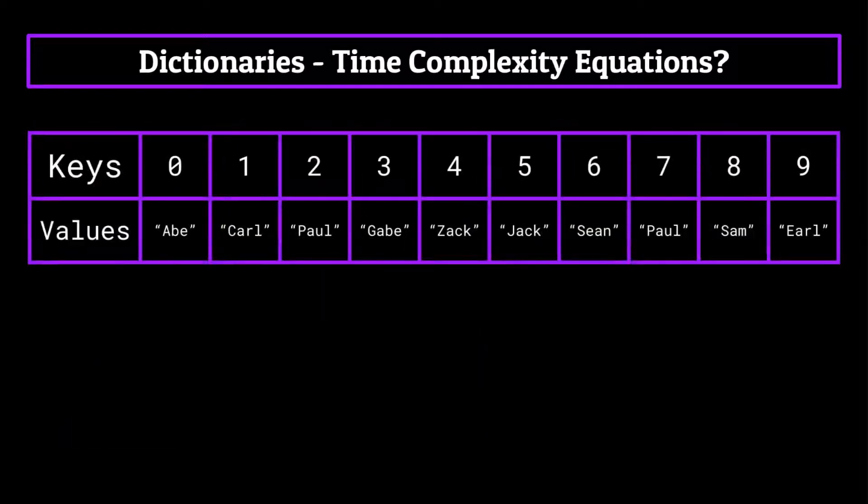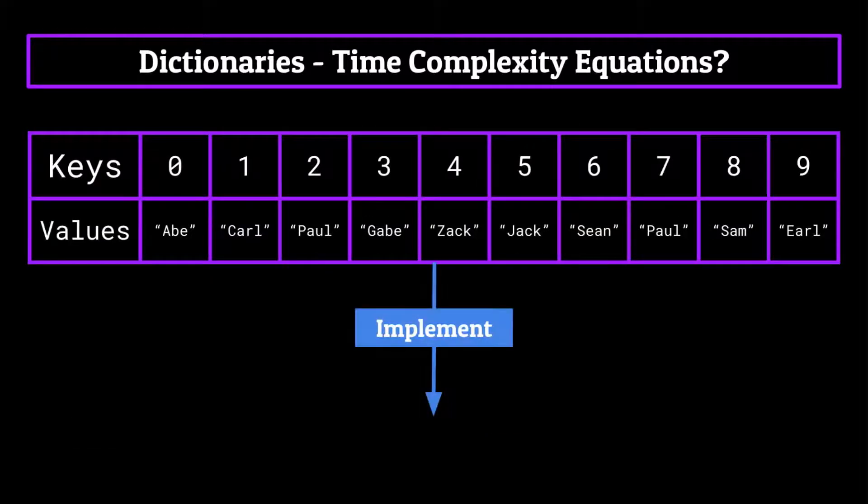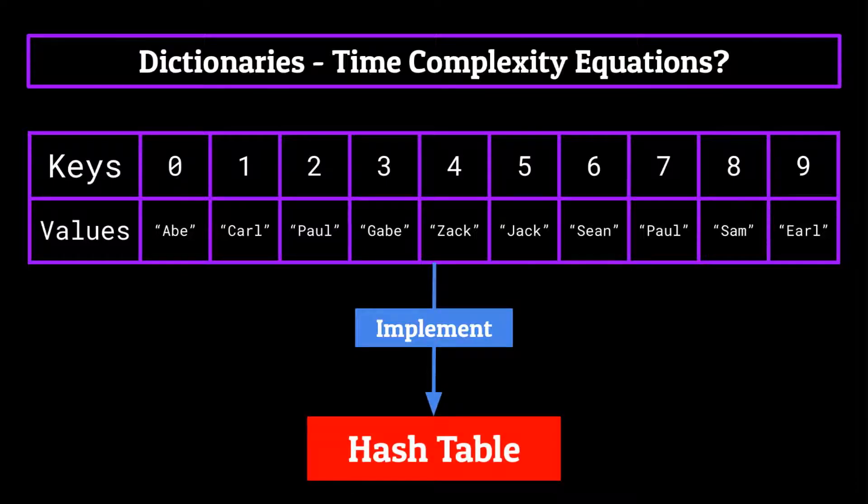Well, the most common way to use a dictionary is to implement it with what's known as a hash table. Hash tables are a little more advanced than the content that I wanted to cover in this series. But they're an extremely important part of dictionaries, especially when it comes to the time complexity. So we're going to have to do a little mini lesson on them today. Doing this will help you better understand the time complexity equations for dictionary. Alright, let's begin.